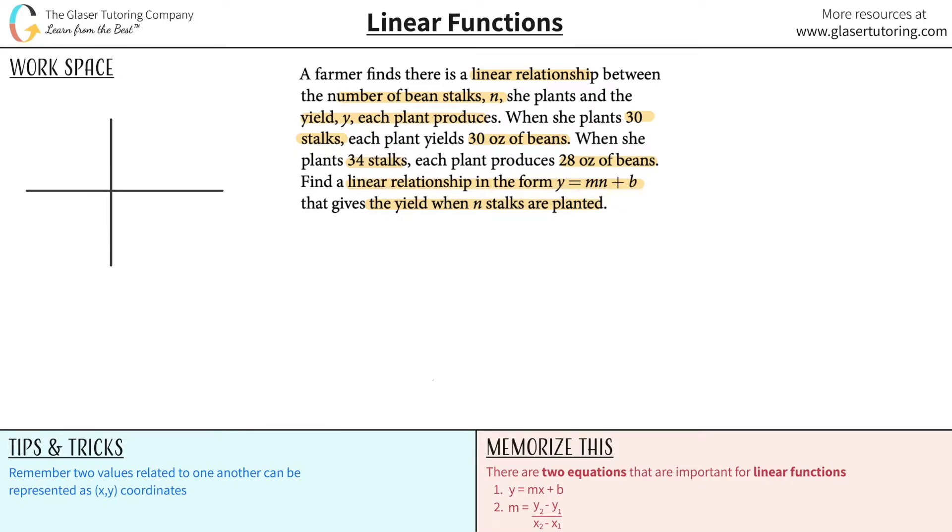All right, so the number of beanstalks and the yield. Now basically, the independent variable usually goes on the x-axis, right? So the number of beanstalks would be independent of the yield. And then the yield, the amount each plant produces would depend upon, aka it's the dependent variable, it would depend upon the number of beanstalks that are planted.